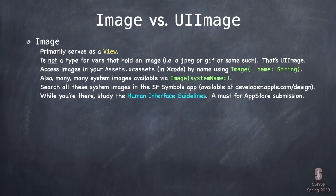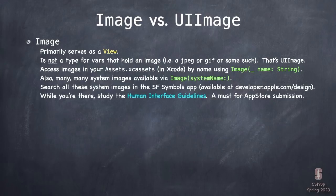You get system images by saying Image(systemName:) and then the name. To find all of them, you need to download an app from developer.apple.com/design called SF Symbols. It has all of them listed and you can search through them by name — the names pretty much encapsulate what they are. While you're there at developer.apple.com/design, there's a document called the Human Interface Guidelines that you really want to read.